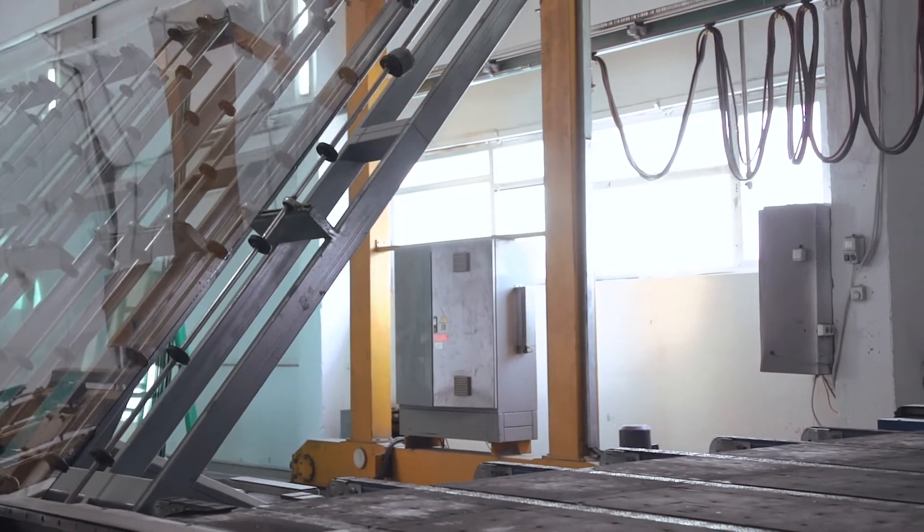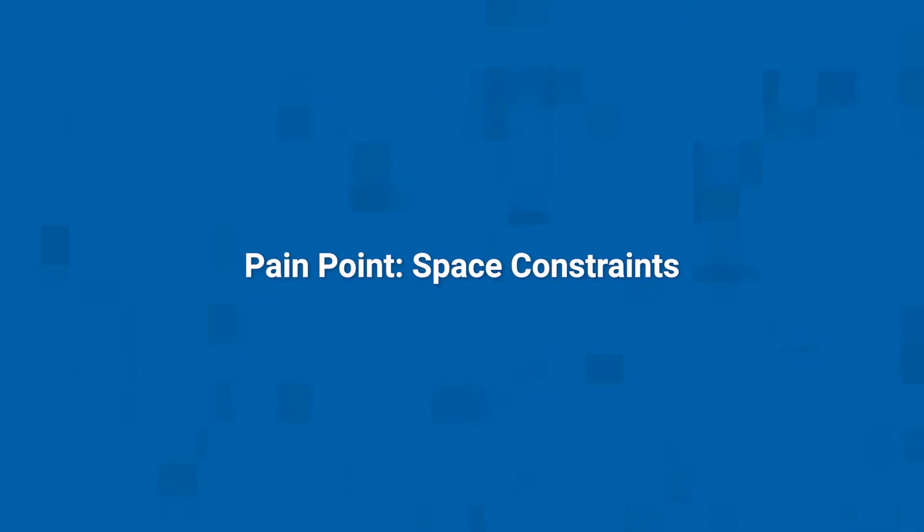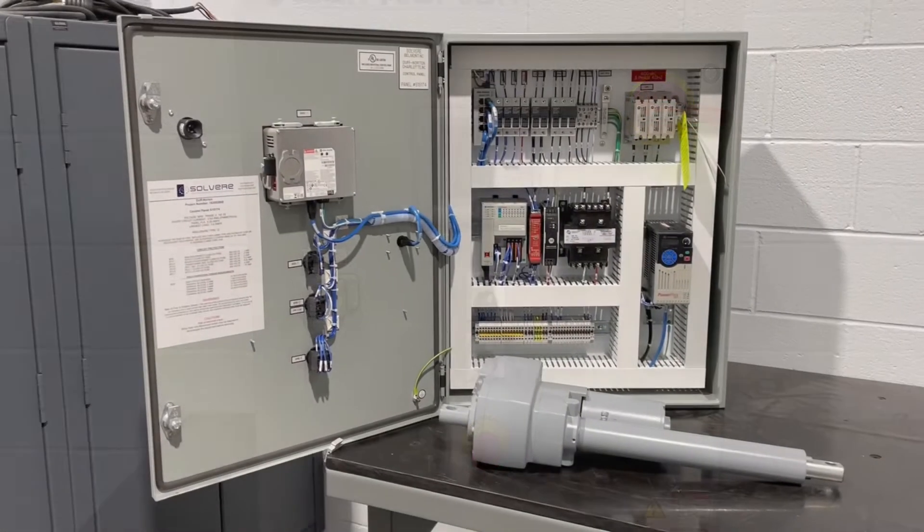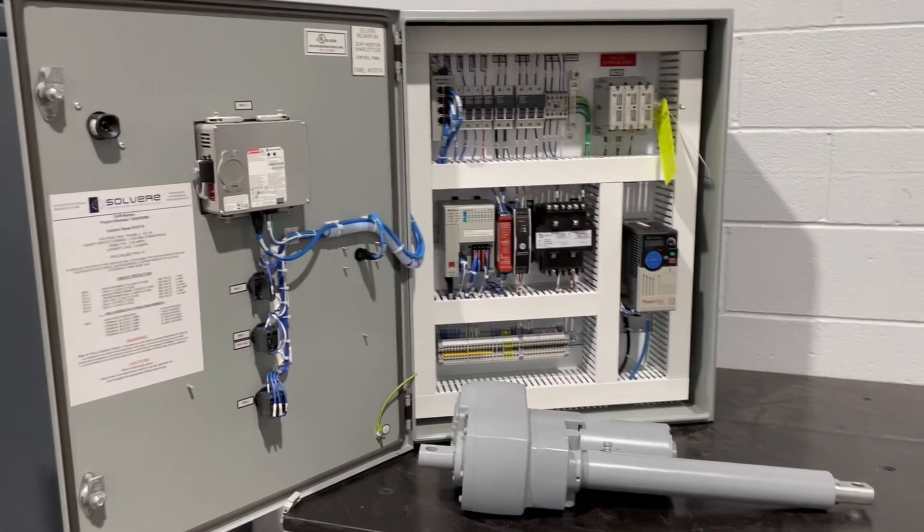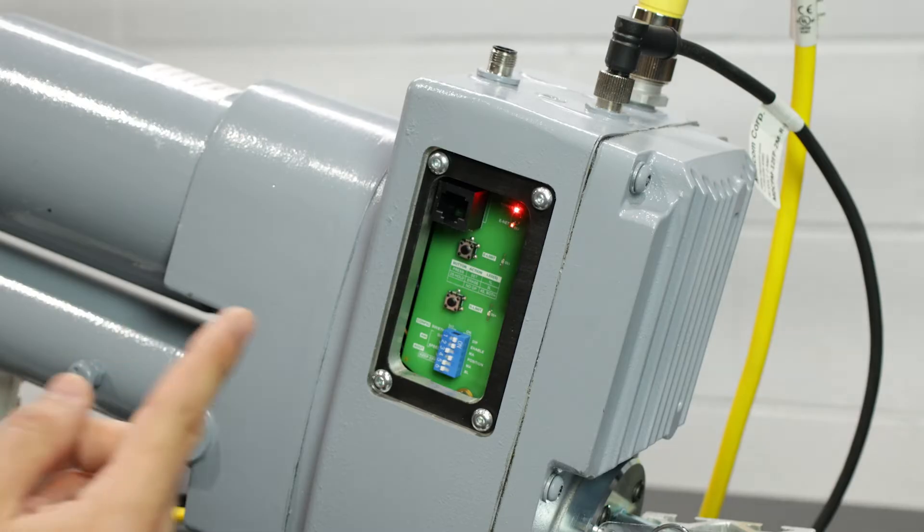Let's talk about some of the application problems our smart actuator can solve. For many applications, there is limited space to install large components or panels that will interface with an actuator. The SPA with Intellimotion has a small footprint because it features onboard variable frequency drive and control circuitry.